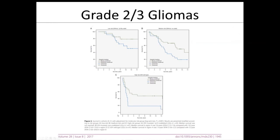That same group in the same Annals of Oncology manuscript tried to determine whether the surgical benefit was specific to a molecular subtype — IDH mutant versus IDH wild type. They stratified into low risk (IDH mutated oligo), medium risk (IDH mutated astrocytoma), and high risk (IDH wild type glioma). Independent of molecular features, early surgical intervention provided a benefit in all three groups.